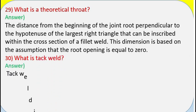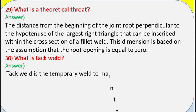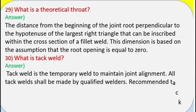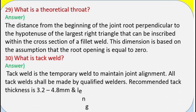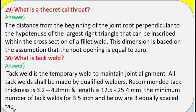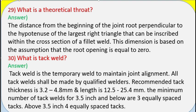Question 29: What is a theoretical throat? Answer: The distance from the beginning of the joint root perpendicular to the hypotenuse of the largest right triangle that can be inscribed within the cross section of a fillet weld. This dimension is based on the assumption that the root opening is equal to zero. Question 30: What is a tack weld? Answer: A tack weld is a temporary weld to maintain joint alignment. All tack welds shall be made by qualified welders. Recommended tack thickness is 3.2–4.8 mm and length is 12.5–25.4 mm. The minimum number of tack welds for 3.5 inch and below is three equally spaced tacks; above 3.5 inch, four equally spaced tacks.